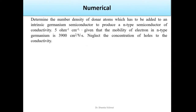The first numerical is to determine the density of the donor atom which has to be added to an intrinsic germanium semiconductor to produce an n-type semiconductor of conductivity 5 ohm inverse centimeter inverse.